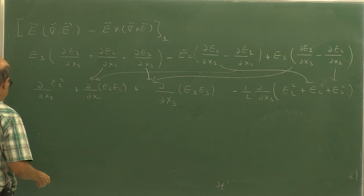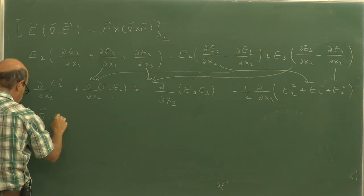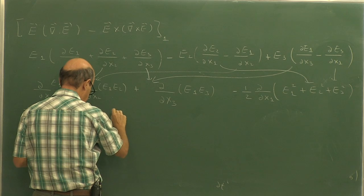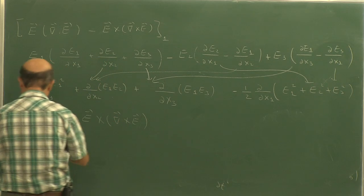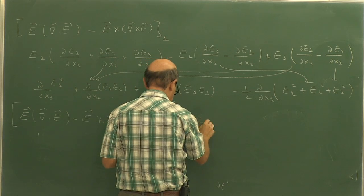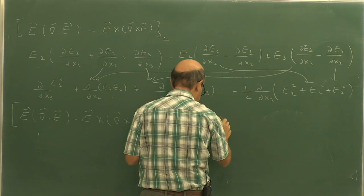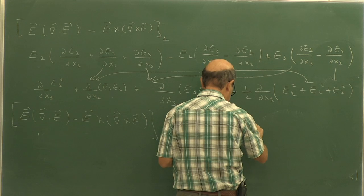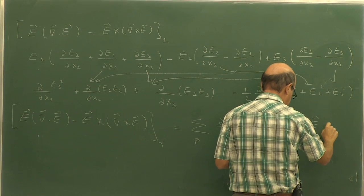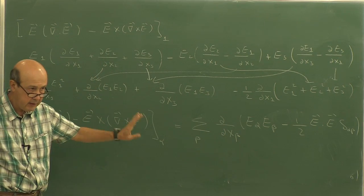So basically we obtain, for the expression E divergence(E) minus E cross curl(E) for the alpha component, the following: a summation over beta from 1 to 3. For any alpha — x, y, z — I can write this. Is it true? Let us check. For alpha equal to 1, beta can be 1, 2, 3.